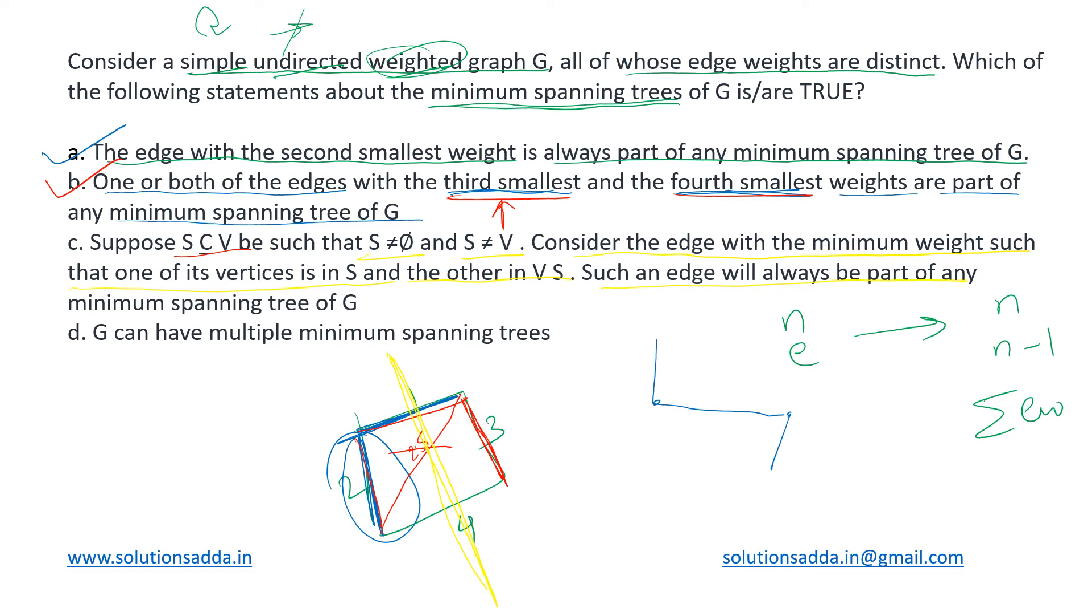So such an edge will always be a part of any MST of G. So basically we have divided a graph into two parts. Some nodes are lying in this part and some remaining ones are lying in the other part. And they are saying that there is a minimum weight edge which lies between two vertices such that one of them lies here and other of them lies in the other part.